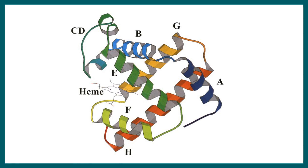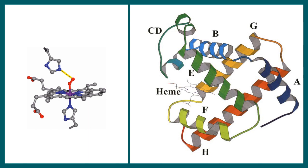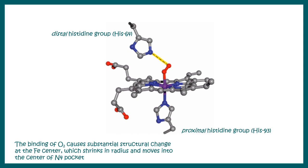The alpha helices are named A through H. At a specific location between helix E and helix F, there is the heme group. This heme group is very important and crucial for oxygen binding.